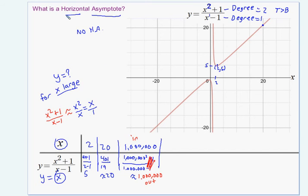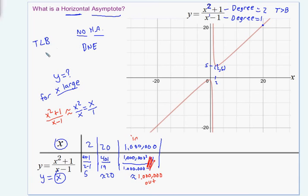There is no horizontal asymptote. There is a slant asymptote, and its equation is y equals x. This question specifically asked for the horizontal asymptote, so the answer is it does not exist. If the degree on top is bigger than the degree on the bottom, you'll get an asymptote, but it'll never be horizontal. In MathAS, you can write D and E, meaning the horizontal asymptote does not exist.